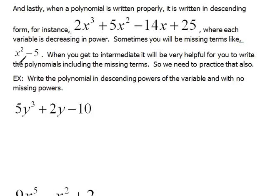Sometimes you're going to be missing terms. In this case here, we have x² and then minus 5. Well, if this was in perfect descending order, we have x², then should come x¹, and then x⁰. We're missing that plain x term. So we're going to practice writing these and putting in those missing terms. This is going to be really important when we start dividing polynomials, so we have to learn how to do this.